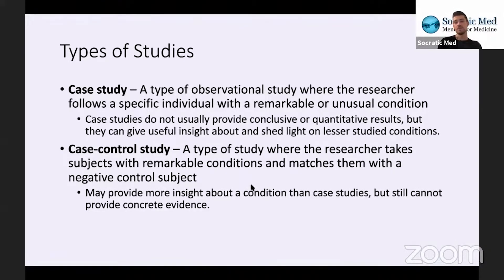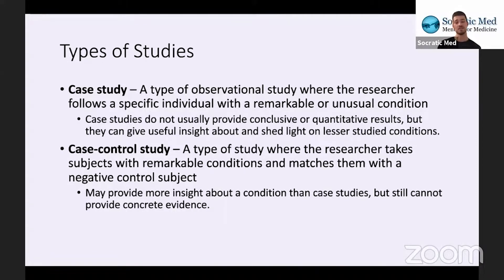A case control study is a type of study where the researcher takes the subject with the remarkable condition and matches them with a negative control subject. For example, if we're studying how life is affected by someone with a rare skin disorder, instead of just doing a case study on that one person, we would find a control — maybe someone who lives a very similar life except without that disorder — and compare the two. We could draw more insight about how specifically the condition is affecting the person's life. But just like a case study, it can't provide concrete evidence because we don't have a large enough sample size for statistical significance.